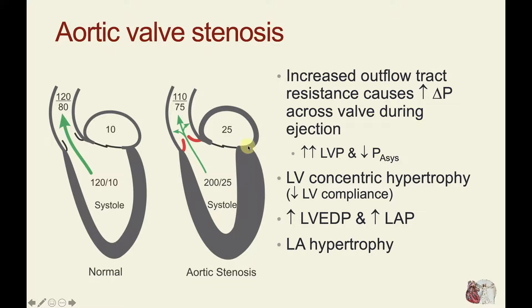We will also see left atrial hypertrophy because the atrium is having to contract against a higher left ventricular filling pressure, and so it will respond by undergoing remodeling and hypertrophy. To summarize: aortic valve stenosis causes left ventricular concentric hypertrophy, which means a decrease in left ventricular compliance, greatly elevated end diastolic pressures, elevated left atrial pressures, and left atrial hypertrophy.